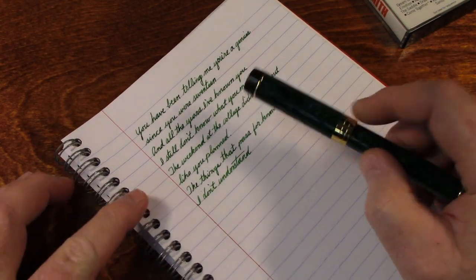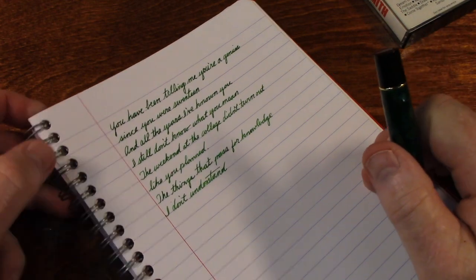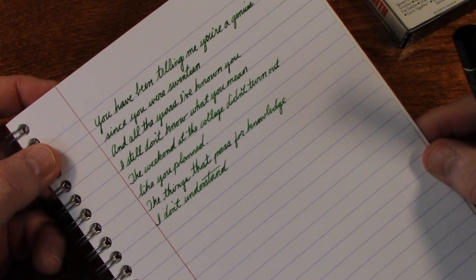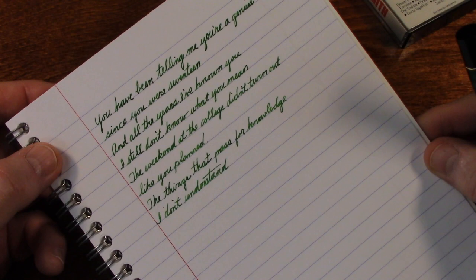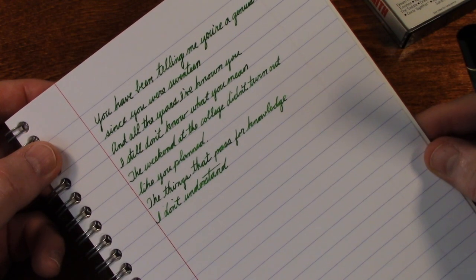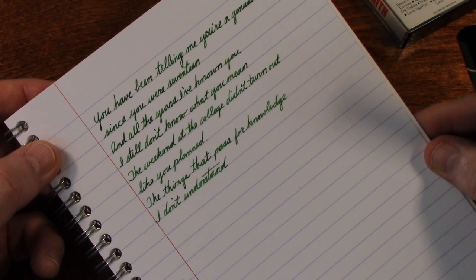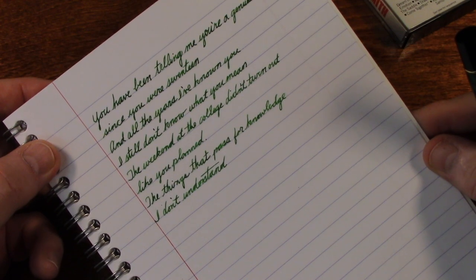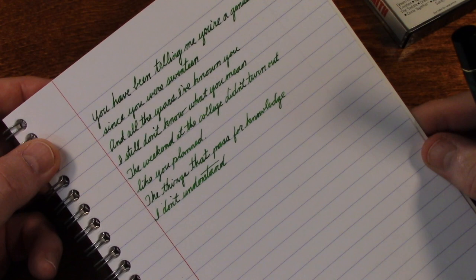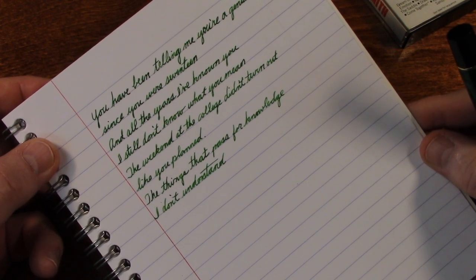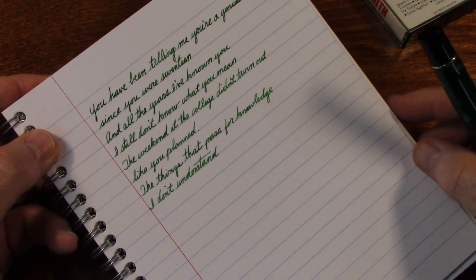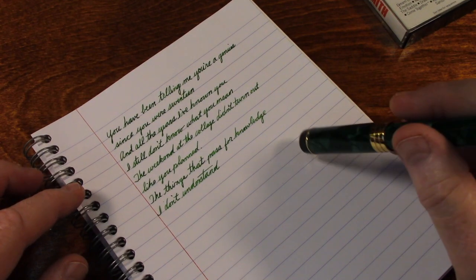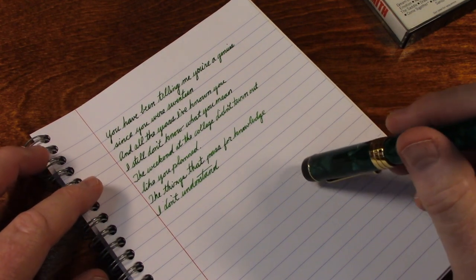So there's some lyrics in here. It says you've been telling me you were a genius since you were 17. And in all the years I've known you, I still don't know what you mean. The weekend at the college didn't turn out like you planned. The things that pass for knowledge, I don't understand. And that's probably the best lyric in the song.